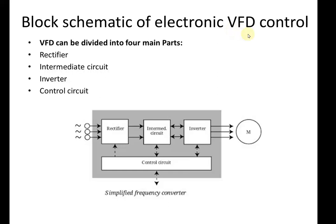The Variable Frequency Drive has other names such as variable speed drive, adjustable speed drive, adjustable frequency drive, and AC drive. The VFD can be divided into four main parts. First is the rectifier — a device which converts AC into DC. The most common application of a rectifier is a mobile charger, which takes AC of 240 V / 50 Hz and converts it to DC of 12 V or 5 V with no frequency, since it is DC. It consists of diodes.